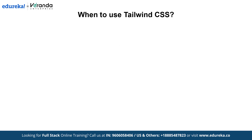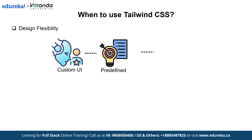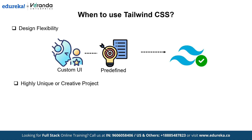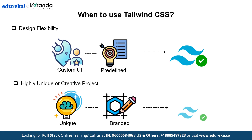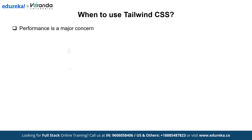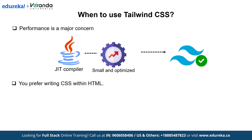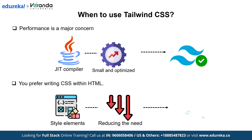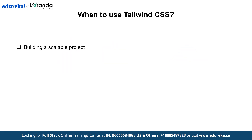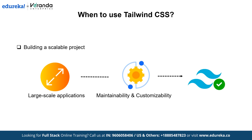Now let's cover when to use Tailwind. Choose Tailwind when you want complete design flexibility, since it lets you build custom UIs without being restricted to predefined styles. It's also the better choice for highly unique or creative projects that need a branded design that stands out. Since Tailwind's JIT compiler removes unused styles, it keeps your CSS file small and optimized, making it ideal when performance is a major concern. Tailwind also works well if you prefer writing CSS within HTML using utility classes, and is a strong fit for large-scale applications where maintainability and customizability are important.